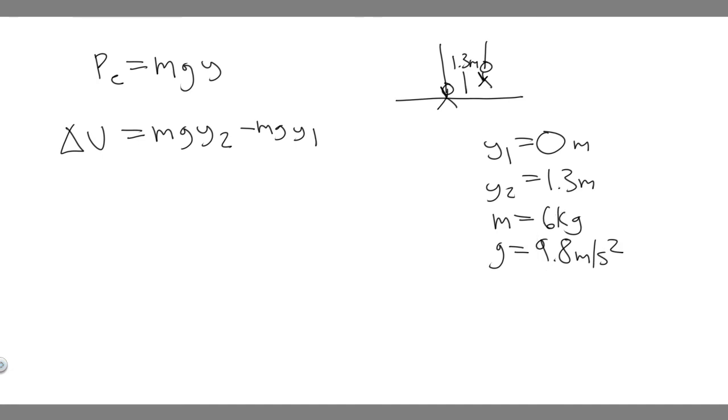What we can do is just simplify this a bit more. So delta U equals mg, and then I'm just factoring out an mg from both of these. So it's just y2 minus y1, because this equation is just the same thing. Because we FOIL this out, it's just going to be this.